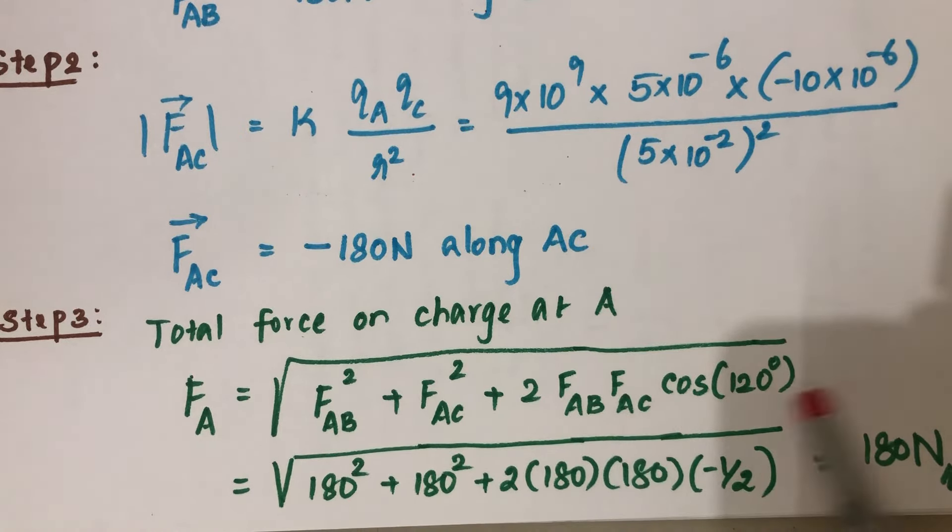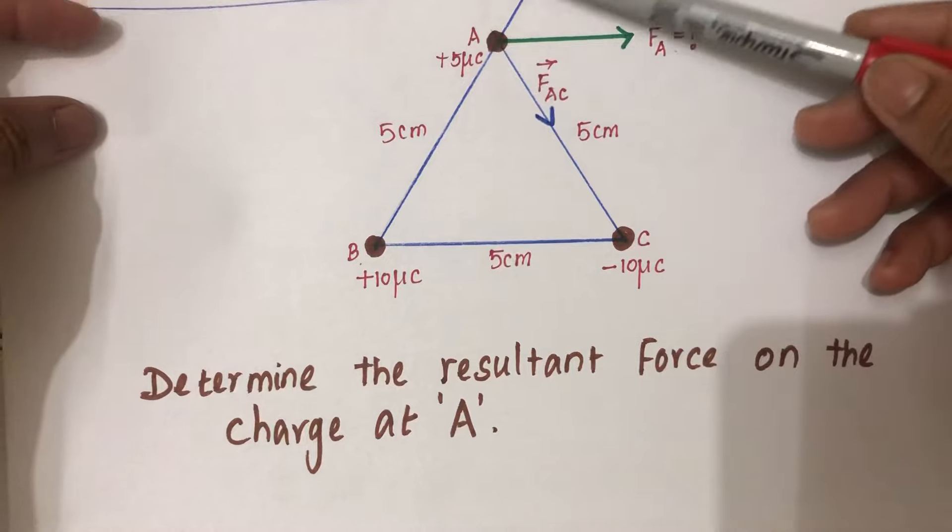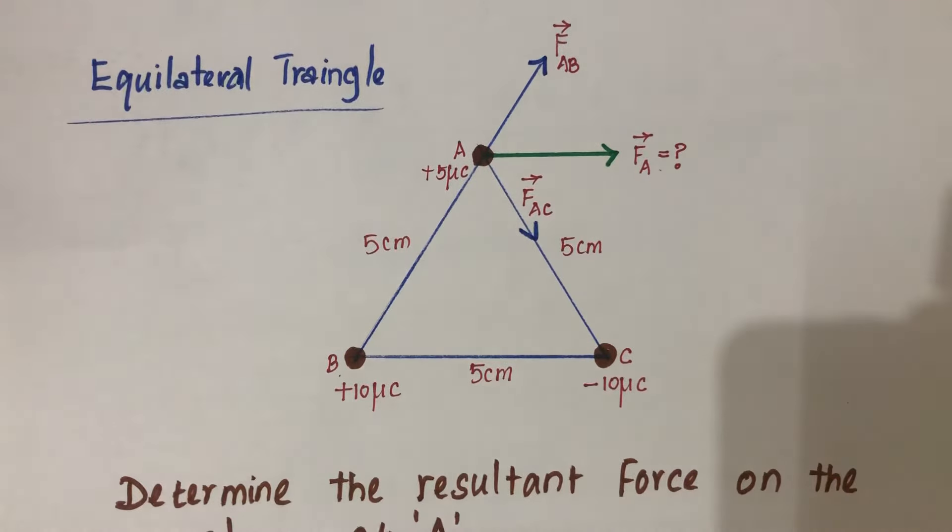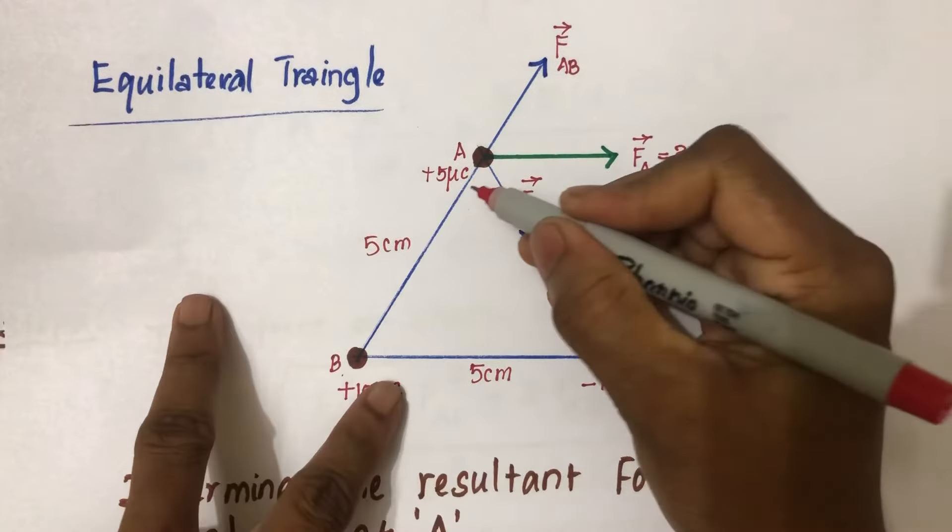The angle between these two forces—since it is an equilateral triangle, this will be 60 degrees and this will be 120 degrees. So this is the angle between FAB and FAC.